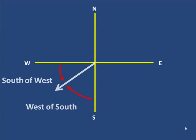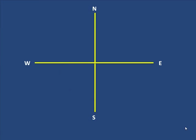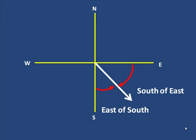Let's look at the last quadrant now. What would this angle be? What do you think? Take a guess. Answer, east of south. And obviously, coming down from the east, it would be south of east.